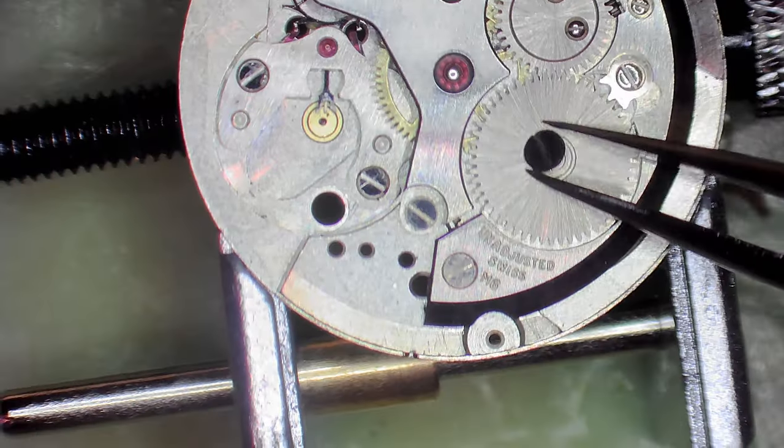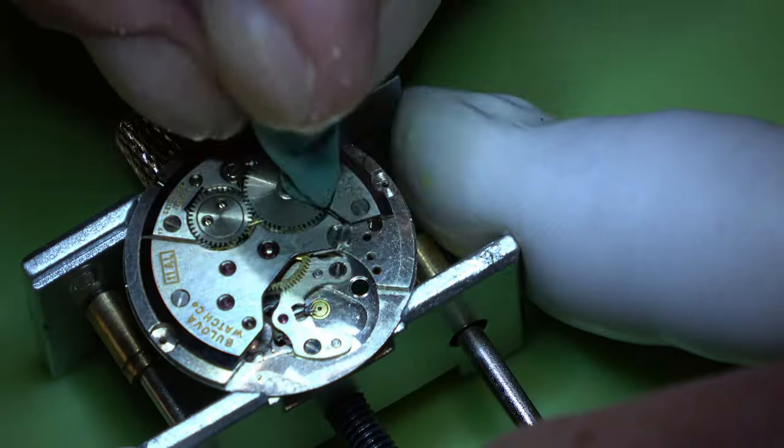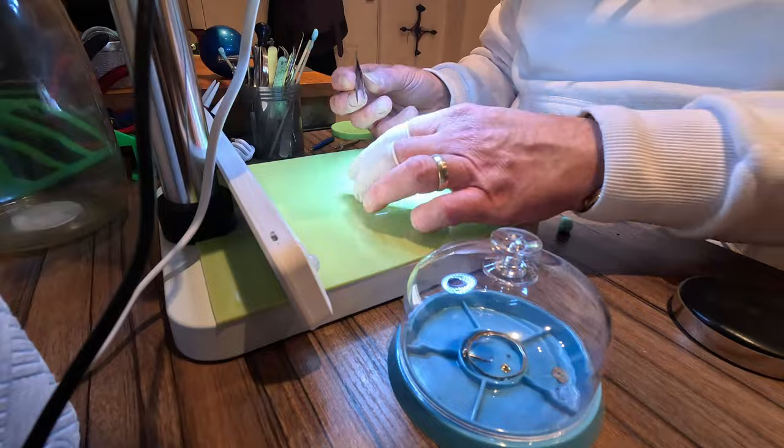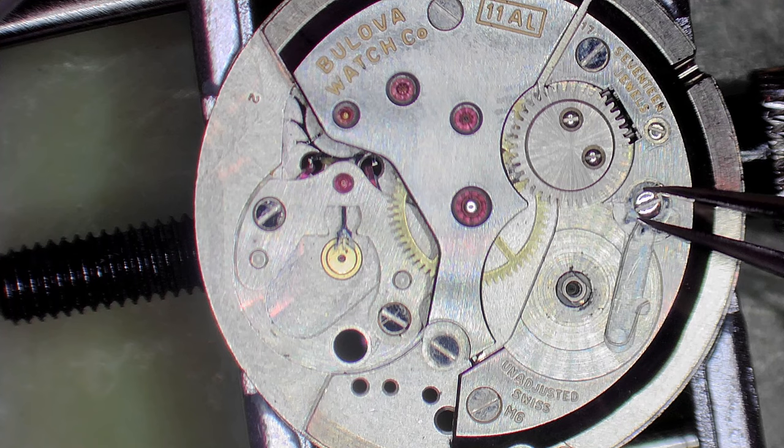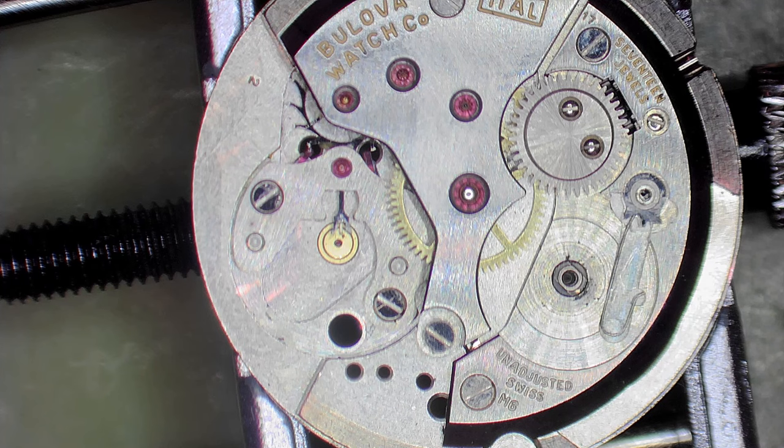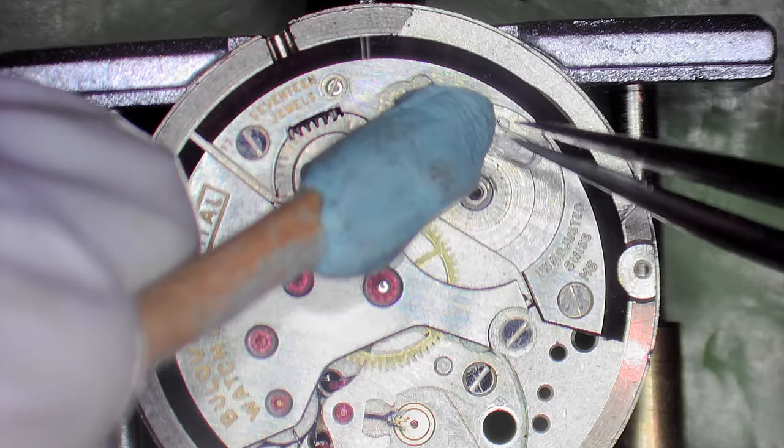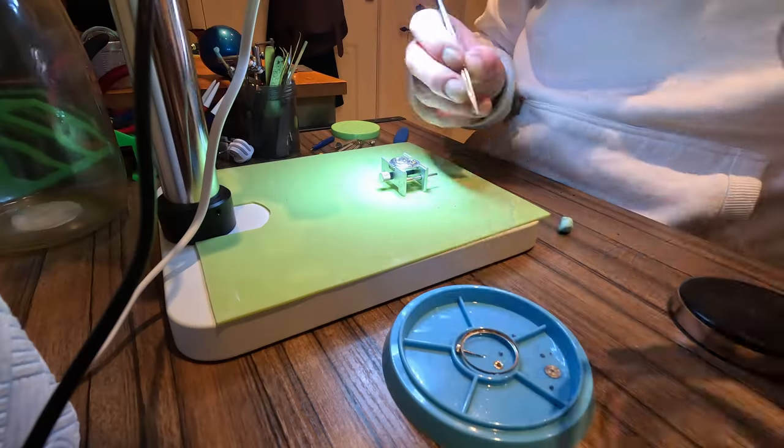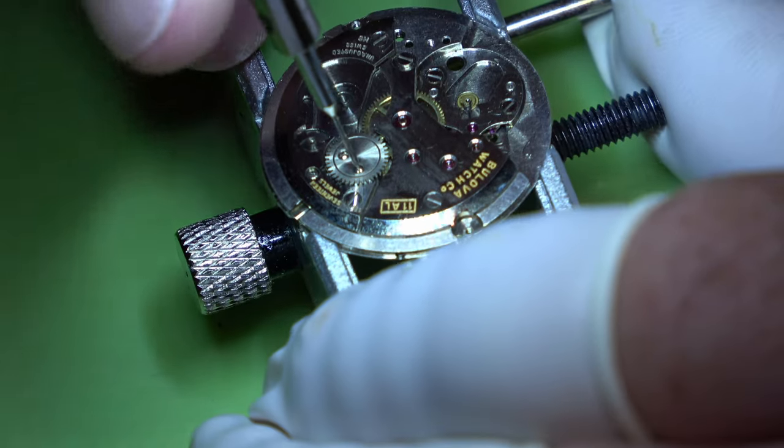And we are going to take off the ratchet wheel and the click spring. I do urge you if you are interested in these sort of videos and you think I would really like to give it a go, get onto eBay, buy yourself a watch movement, buy some cheap tools and give it a go. One thing I will say is if you can try with a pocket watch and look for something that has jewels in it.